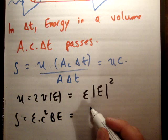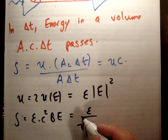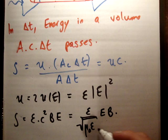And that's going to be equal to epsilon over the square root of mu zero or mu epsilon times the electric field times the magnetic field.